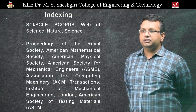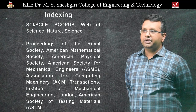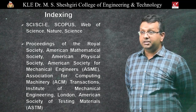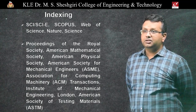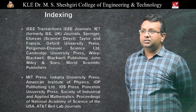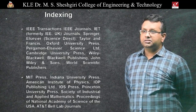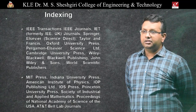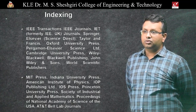Indexing of a journal is very important and can include SCI, SCIE, Scopus, Web of Science, Proceedings of the Royal Society, and others. You could also consider IEEE Transactions, IEEE journals, IET, Springer, and Elsevier, among others.